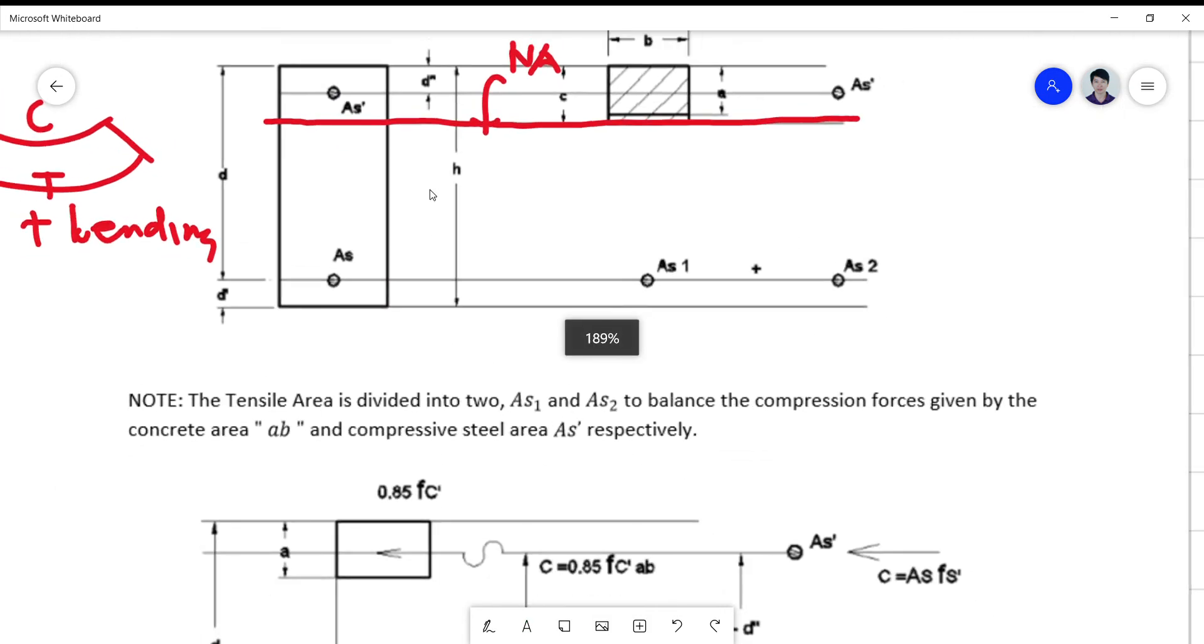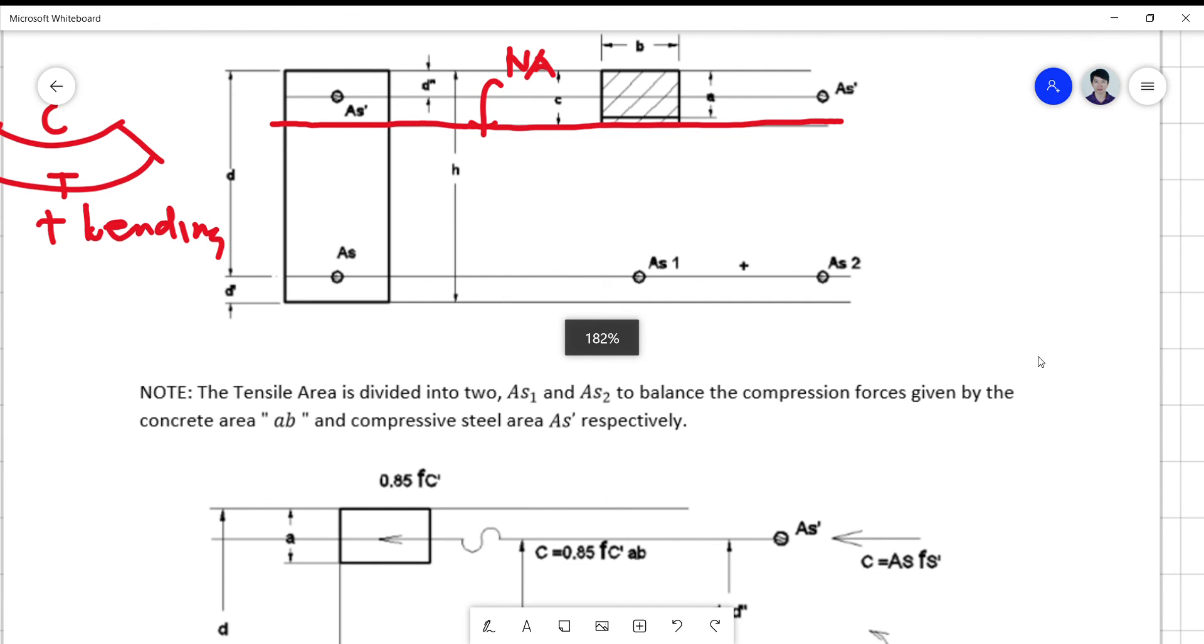So notice that now your situation is that we assume your As to be divided into two. As is actually equal to As1 and As2, where your As1 is actually balanced by the compression block,